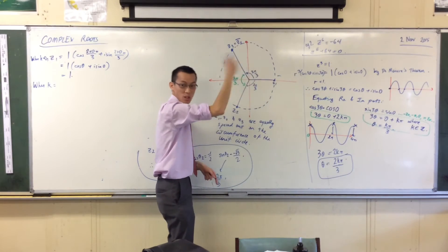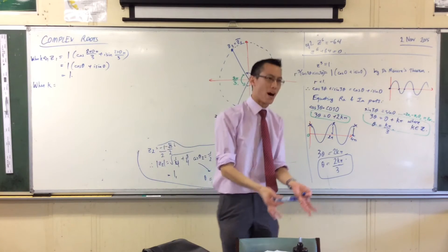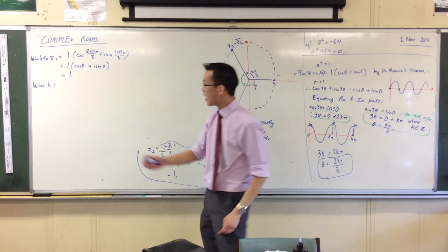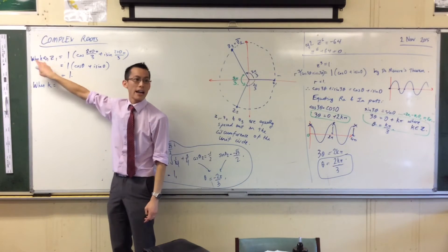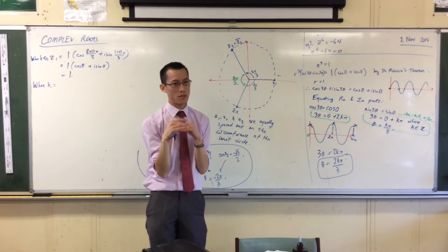So I'm just going around lots and lots of times. Now, if I just want the principal argument, then I want k equals 0, and I want all the numbers that are closest to 0. Does that make sense?